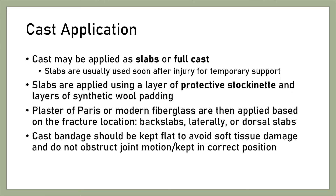Cast application: Cast may be applied as slabs or full cast. Slabs are usually used soon after injury for temporary support. Slabs are applied using a layer of protective stockinette and layers of synthetic wool padding. Plaster of Paris or modern fiberglass are then applied based on the fracture location — back slabs, lateral or dorsal slabs. Cast bandage should be kept flat to avoid soft tissue damage and should not obstruct joint motion or prevent the limb being kept in correct position.